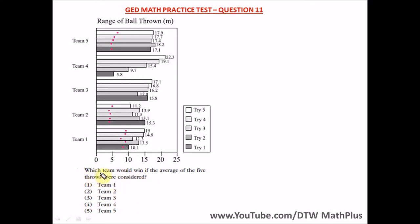Which team would win if the average of the 5 throws were considered? Each team had 5 throws, so if the average of the 5 throws of each team is the highest, that team wins. We have to find the average of each team's five throws.